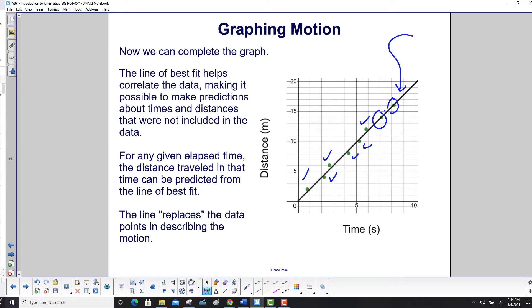The line of best fit helps correlate the data, making it possible to make predictions about times and distances that were not included in the data. For any given elapsed time, the distance traveled in that time can be predicted from the line of best fit. And here's the key statement: The line replaces the data points in describing the motion. Once you have the best fit line, you don't look at the points anymore.